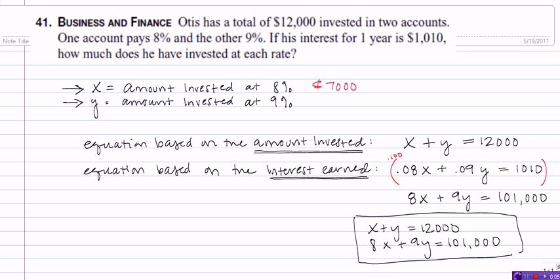And since we got a value for Y of 5,000, that implies that the amount that Otis invested at 9% is $5,000.